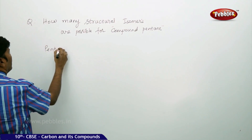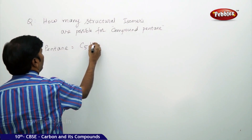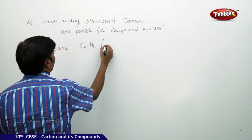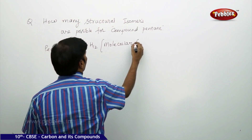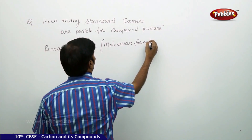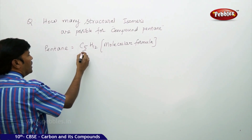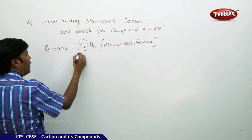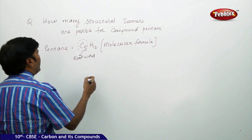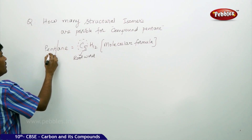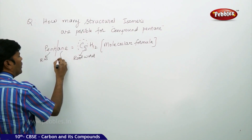If you go for pentane, this is C5H12 — that is the molecular formula. If you go for the structural formula, the best thing is to take the number of carbons. The root word is 'pent', so pentane has 'pent' as the root word and 'ane' as the primary suffix.